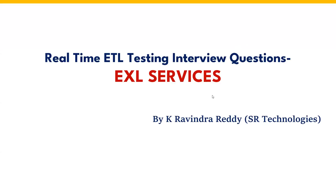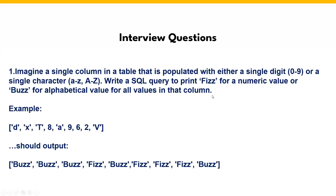The question which they have asked: imagine a single column in a table that is populated with either a single digit or single character. Write a SQL query to print 'fizz' for a numeric value or 'buzz' for an alphabetical value for all values in that column.